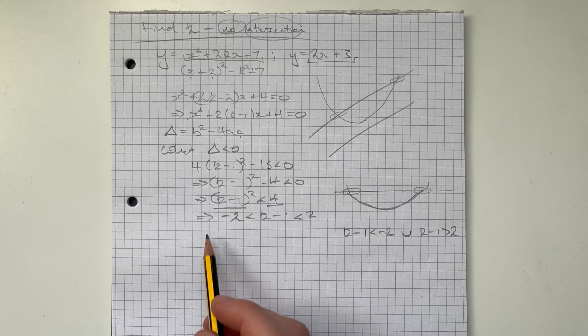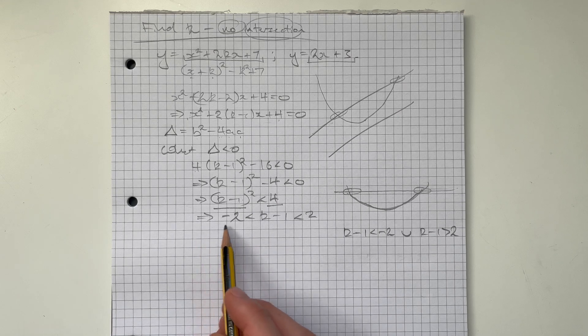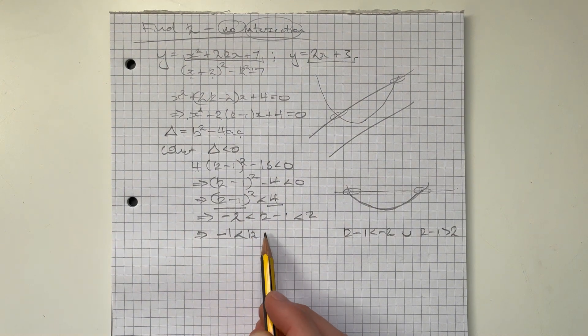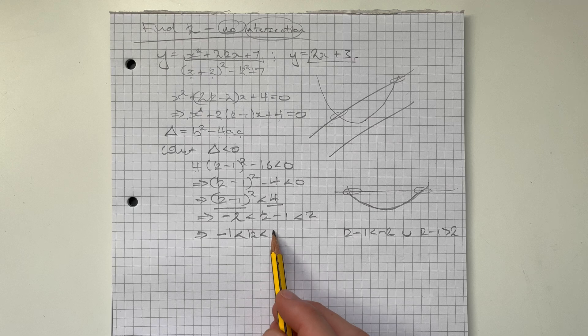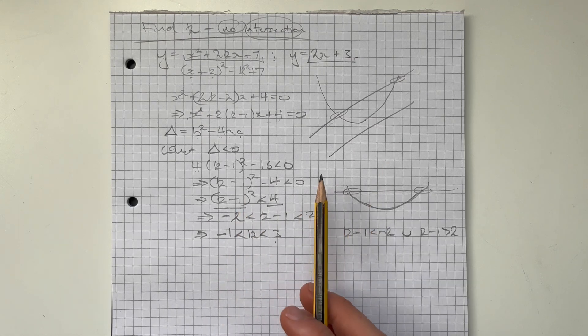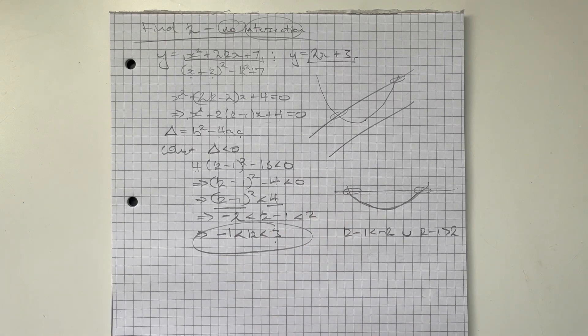So next step then, we just need to add 1 to both sides, or to all three sides. And what we're left with then is that negative 1 is less than k is less than 3. So k needs to be between minus 1 and 3, and that will mean that there's no intersections between our two curves.